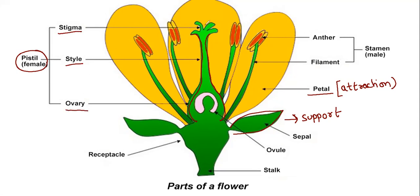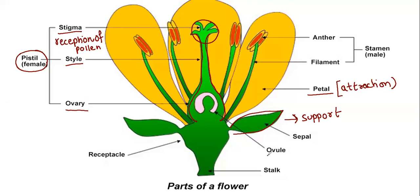The stigma is meant for the reception of pollen. And the style is a long tube which leads towards the ovary, where the egg cells are. The egg cell, in the case of a flower, is known as the ovule.